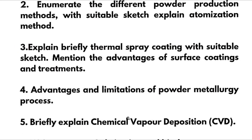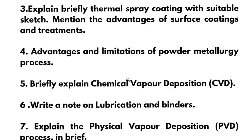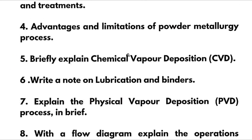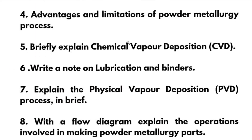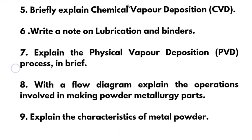Third: explain briefly thermal spray coating with a suitable sketch and mention the advantages of surface coatings and treatments. Fourth: advantages and limitations of the powder metallurgy process. Fifth: briefly explain Chemical Vapor Deposition — again super important, so focus on the diagrammatic part. Sixth: write a note on lubrication and binders.